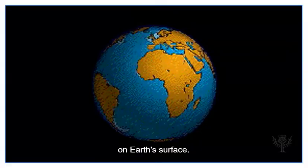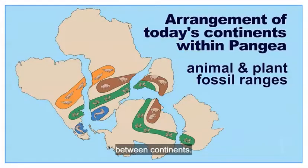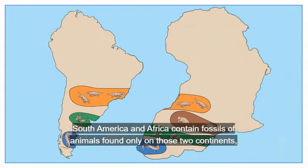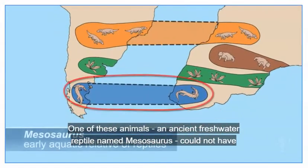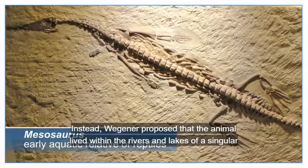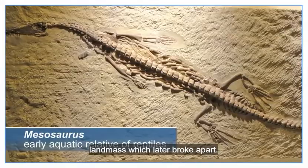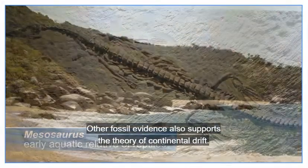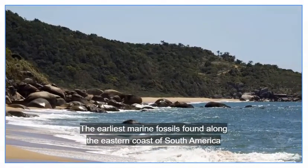Wegener supported his theory by demonstrating the biological and geological similarities between continents. South America and Africa contain fossils of animals found only on those two continents, with corresponding geographic ranges. One of these animals, an ancient freshwater reptile named Mesosaurus, could not have crossed the Atlantic Ocean. Instead, Wegener proposed that the animal lived within the rivers and lakes of a singular land mass which later broke apart.